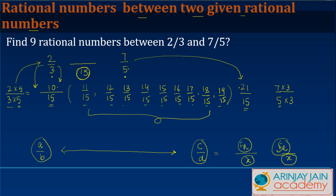So that way I found out 9 rational numbers which lie between these two rational numbers.